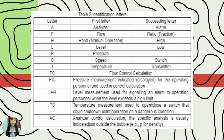FC means flow control calculation. PIC means pressure measurement indicated or displayed for operating personnel and used in control calculation. LAH means level measurement used for signaling an alarm to operating personnel when the level exceeds a high limit. TS means temperature measurement used to open or close a switch that could shut down plant operation under a dangerous condition. AC means analyzer control calculation, or the specific analysis which is usually indicated or adjusted outside the bubble. Next, my groupmate Alicia Labanero will discuss table 3.